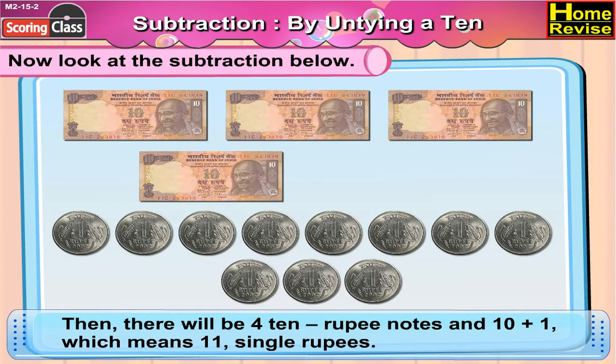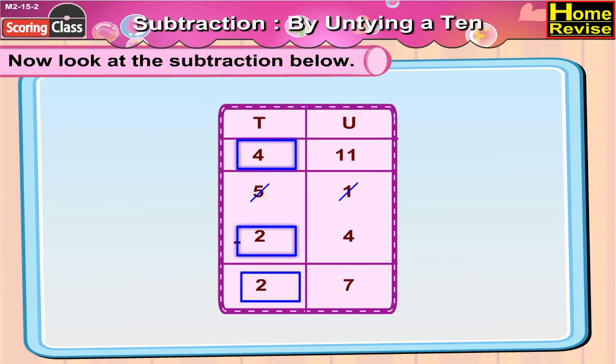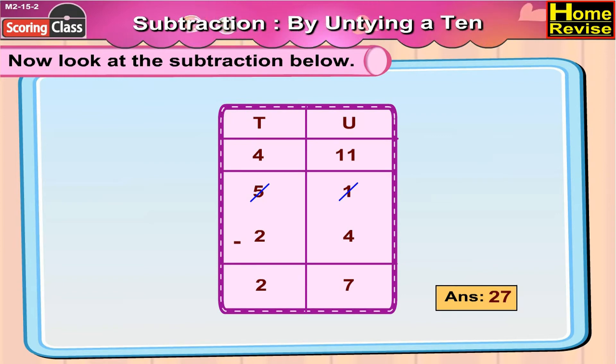Let us see the subtraction now. That means it is 5 tens 1 unit minus 2 tens 4 units. We have to subtract 24 from 51. 4 cannot be subtracted from 1, so we will untie 1 ten from 5 tens. It will be 4 tens 11 units. 11 minus 4 is 7, 4 minus 2 is 2. So the answer is 27.